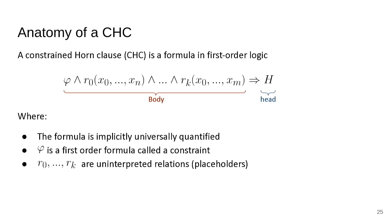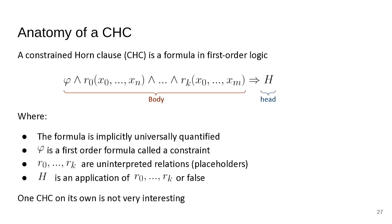The symbols R0 through Rk are uninterpreted relations — placeholders. The head is either an application of one of these placeholders or the constant false. One CHC on its own is not very interesting, but when we have a whole system of them, we can verify useful things.